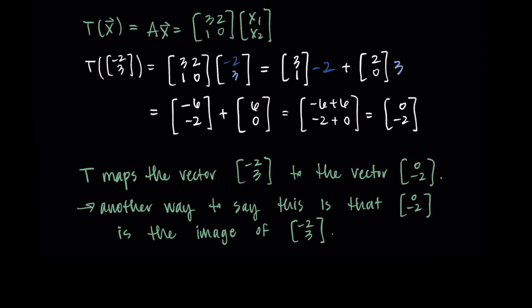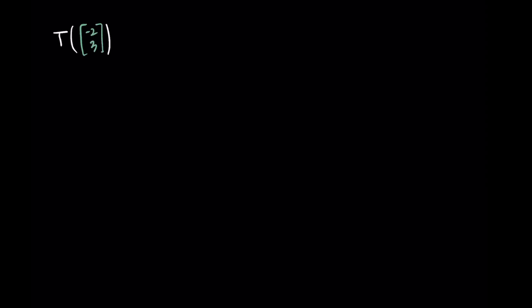So that's the more algebraic interpretation of what's going on. We could also look at this graphically. So we know that T of the vector [−2, 3] is equal to [0, −2]. We also sometimes use this arrow with the bar on the left-hand side to show that [−2, 3] gets mapped to [0, −2]. So it correlates that input to the output.